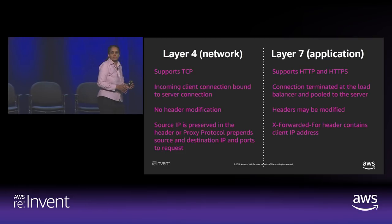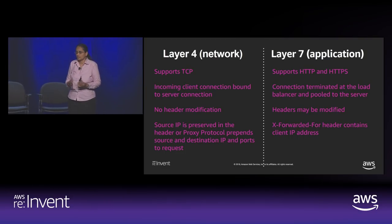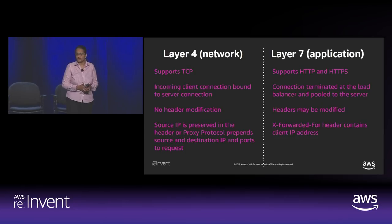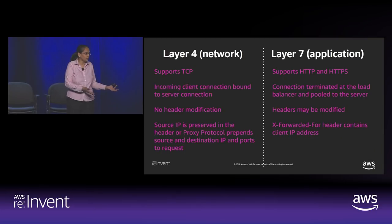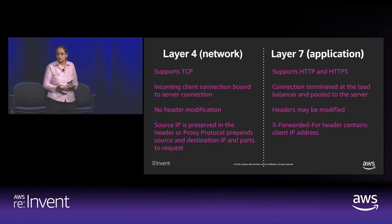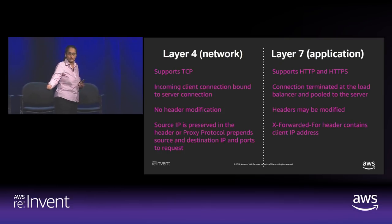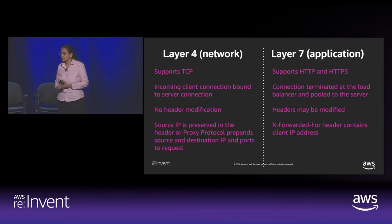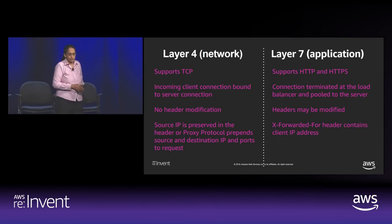With the introduction of Application Load Balancer and Network Load Balancer, we talk to customers about the types of load balancers. For those familiar with the OSI layer, there are two types: a layer 4 and a layer 7. The layer 4 load balancer supports TCP, and some also support UDP. The incoming client connection is attached to the server connection — connections are not terminated, no headers are modified. Some load balancers preserve the source IP by prepending it to a proxy protocol V2 header, which is a definition that HAProxy came up with.